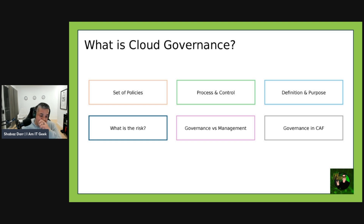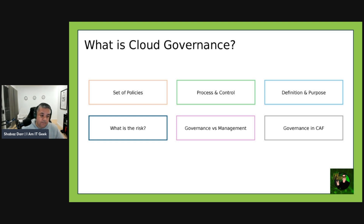Taking that further, governance in Microsoft's Cloud Adoption Framework breaks down into five disciplines: cost management, security baseline, resource consistency, identity baseline, and deployment acceleration. These disciplines help you build a governance MVP — a minimum viable governance — to start with, which will scale and grow over time. This is all part of Microsoft's CAF, which provides a structured approach to cloud adoption and governance. Governance ensures your cloud environment remains secure, compliant, and manageable as you scale.